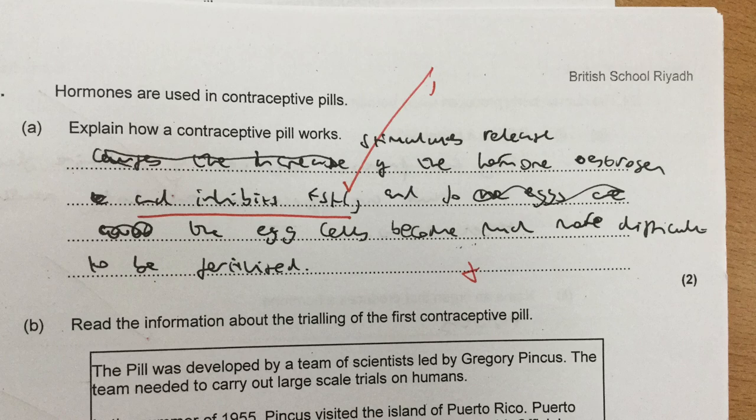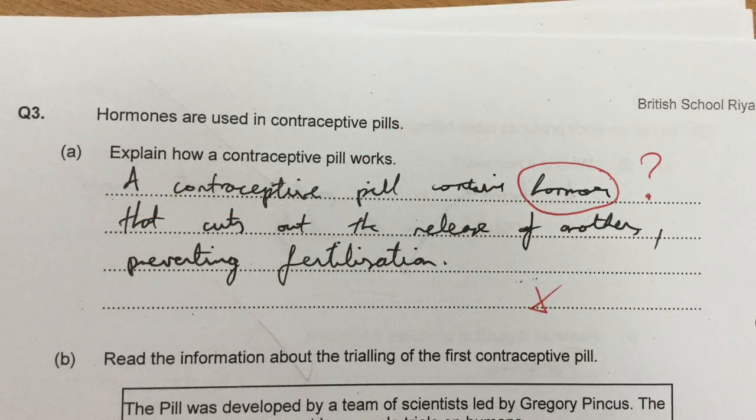Let's look at some student responses. This student clearly says that FSH is inhibited — one mark. But then he says that the egg becomes more difficult to be fertilized. No mark there because, of course, the egg's not going to be fertilized.